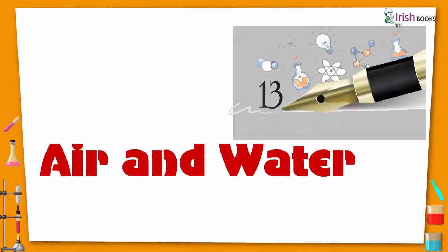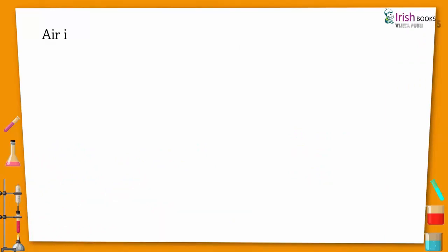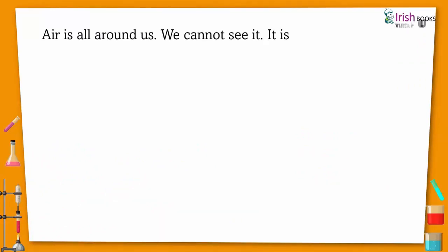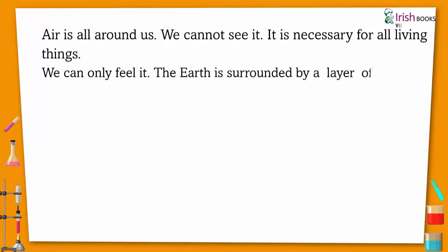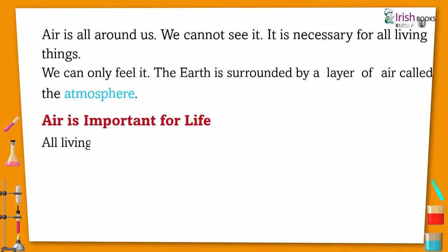Chapter 13: Air and Water. Air is all around us. We cannot see it. It is necessary for all living things. We can only feel it. The Earth is surrounded by a layer of air called the atmosphere. Air is important for life.